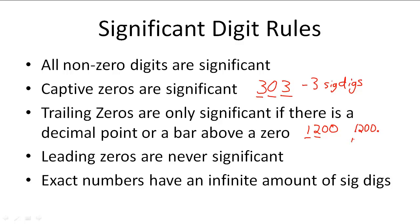If I have 1,200 and put a bar over the first zero, then 1, 2, and that zero with a bar over it are significant — giving three significant digits. So remember: trailing zeros are only significant if there's a decimal point or a bar above the zero.